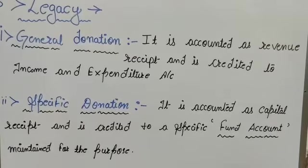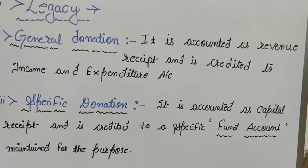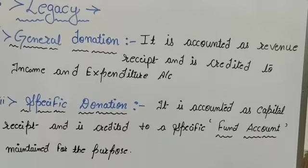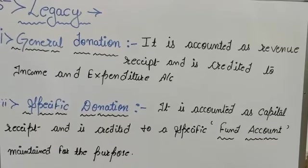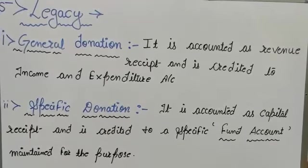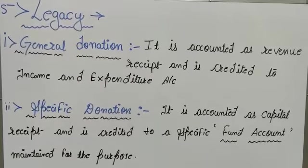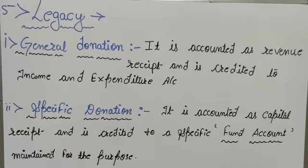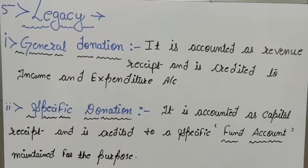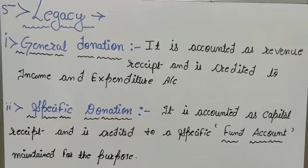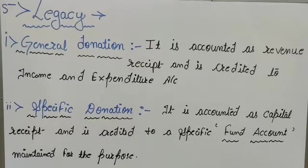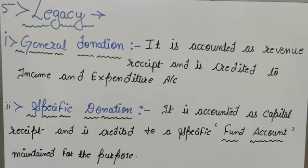General legacy means in general legacy a person is simply transferring his money and property but there is no specific reason for using that property. But in specific legacy or specific donation, a person is transferring his money and property but he is giving a particular reason for transferring that.